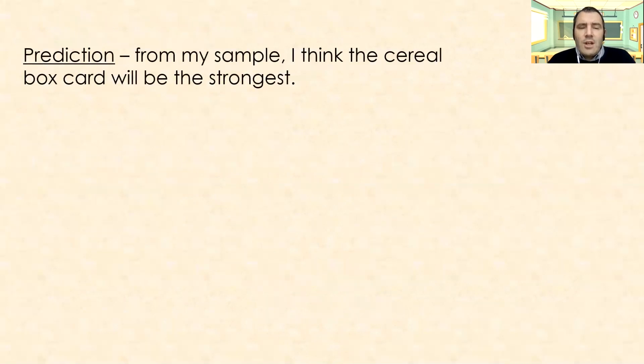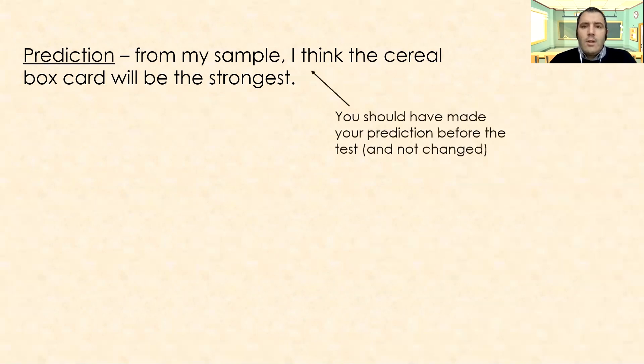My prediction. So from my sample, I think that the cereal box will be the strongest. That was my prediction. So we should have had our prediction before we made our test, and this shouldn't change. This gives you the opportunity. If you predicted that something else would be stronger and it wasn't, it gives you an opportunity in your conclusion to have a look at why you think that's the case, why you think you were wrong.